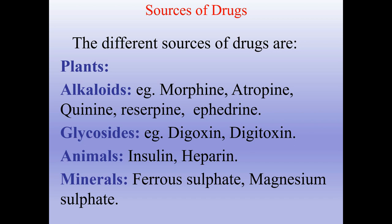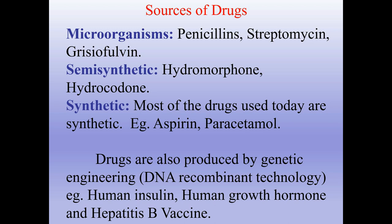The different sources of drugs are: plants — alkaloids such as morphine, atropine, quinine, and glycosides such as digoxin and digitoxin; animals — insulin, heparin; minerals — ferrous sulfate, magnesium sulfate; microorganisms — penicillins, streptomycin, griseofulvin; semi-synthetic — hydromorphone, hydrocodone. Most drugs used today are synthetic, for example aspirin and paracetamol.